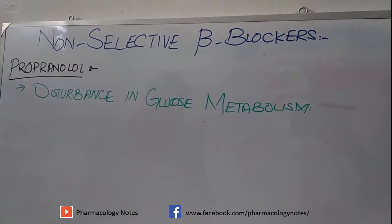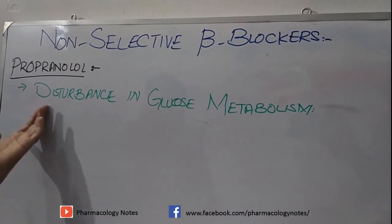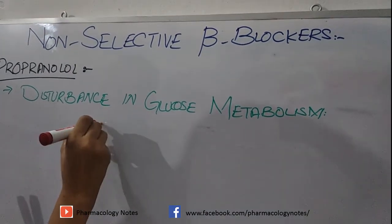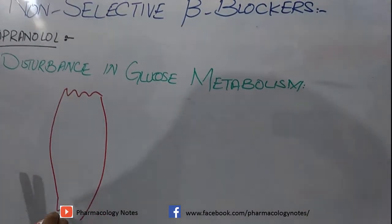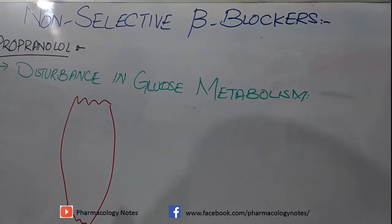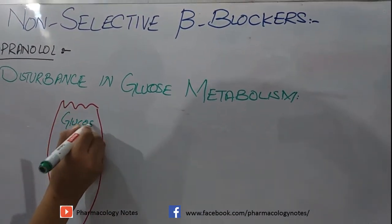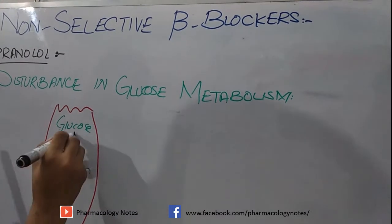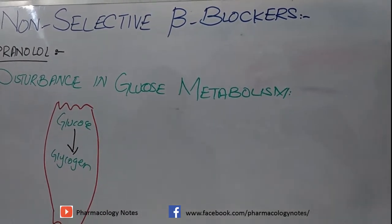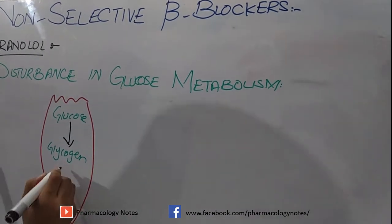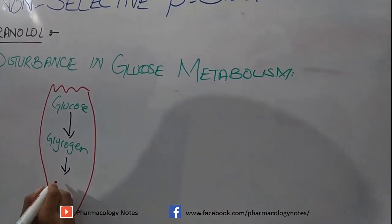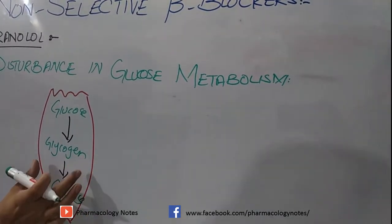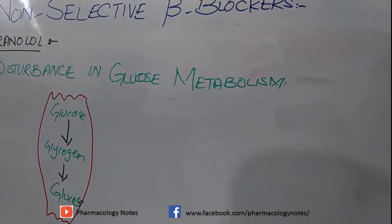Propranolol also causes sodium and fluid retention in the body. Regarding glucose metabolism: normally, when food is consumed, glucose enters skeletal muscle and is stored as glycogen. Whenever the body needs glucose, this glycogen is converted back into glucose for use. This conversion of glycogen into glucose is called glycogenolysis.